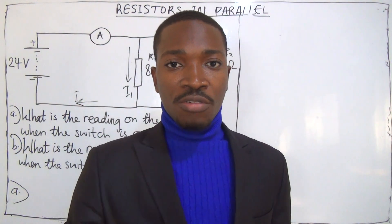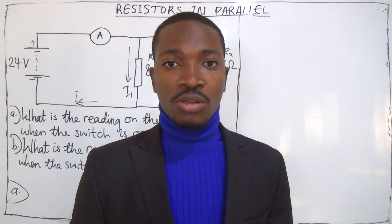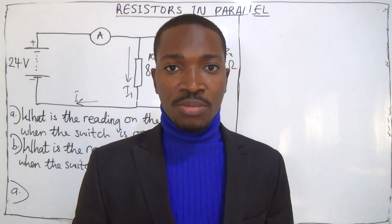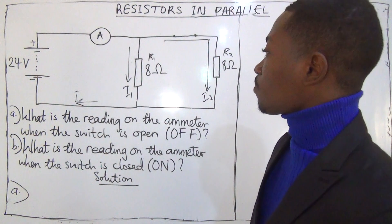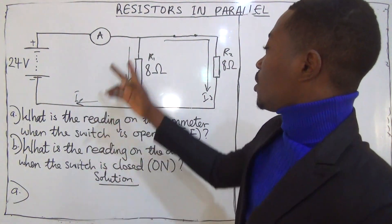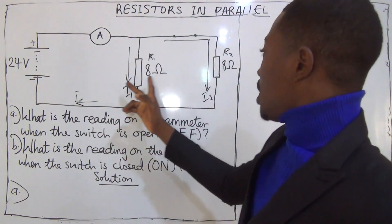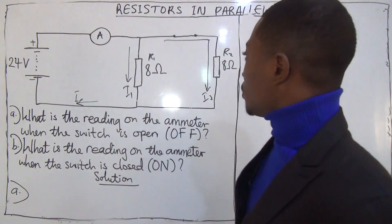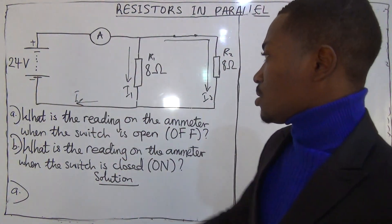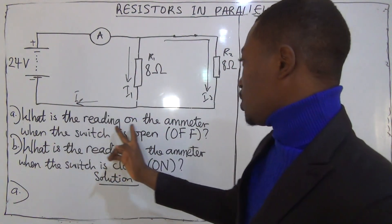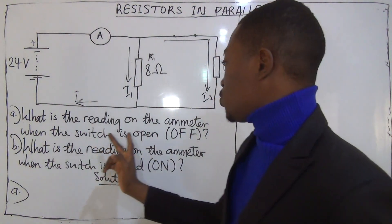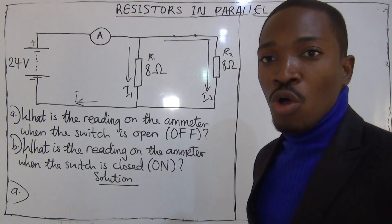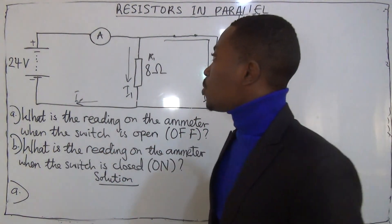Now we want to solve a question on resistors in parallel. The question says: what is the reading on the ammeter when the switch is open?